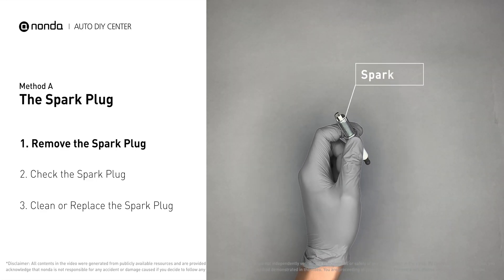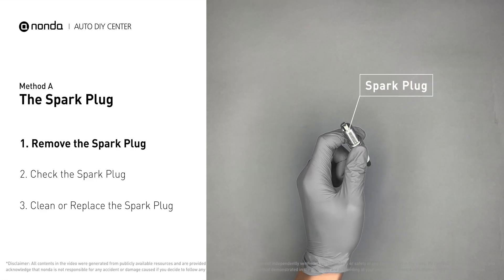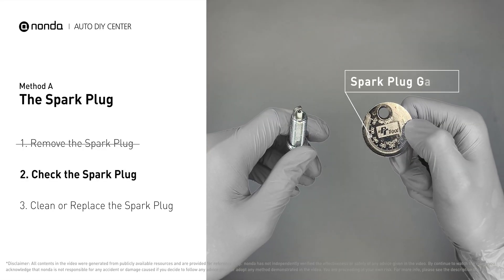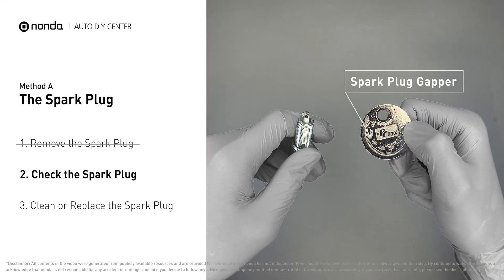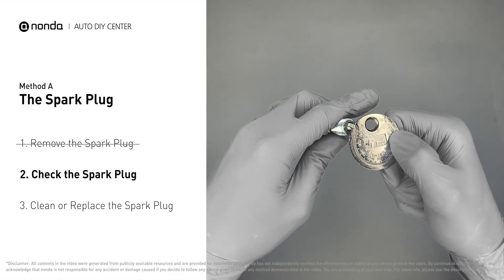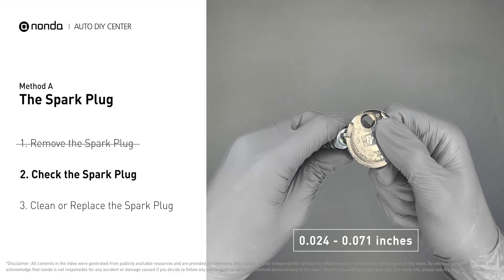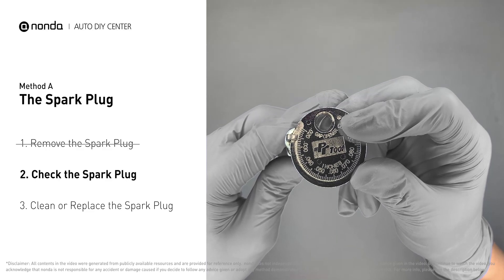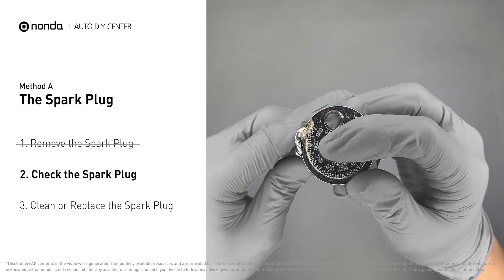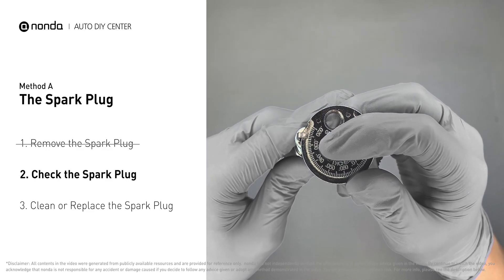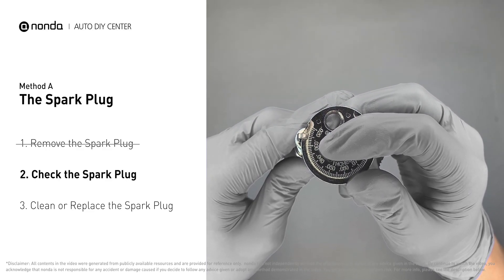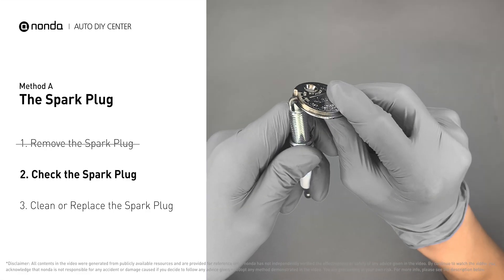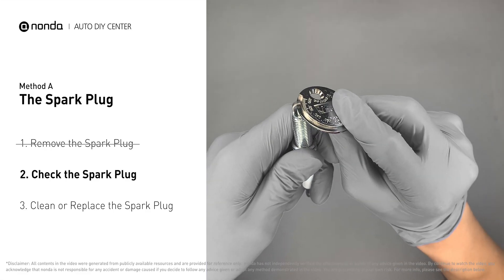First, carefully remove the spark plug. Use a spark plug gapper to check the spacing of this spark plug. Normally the spacing should be between 0.024 to 0.071 inches. As you can see, the spacing of this spark plug is a bit low. Use the spark plug gapper to increase the spacing back to the normal range.